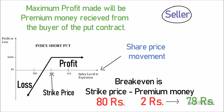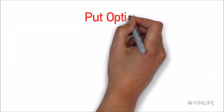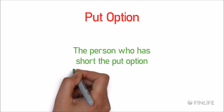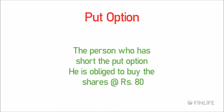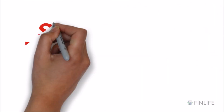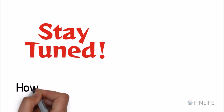The put buyer can sell shares at 80 rupees as contracted and rebuy at the lower market price. The person who shorted the put option is obliged to buy shares at 80 rupees as mentioned in the contract. That is the payoff diagram for the short put option contract. Stay tuned for upcoming videos on how to make 1 to 2% returns from shorting options and calls using various strategies.